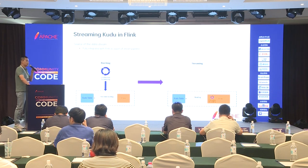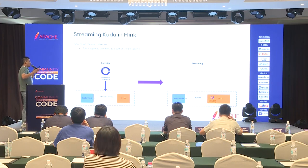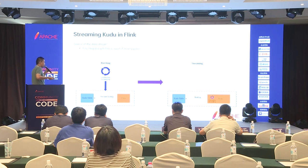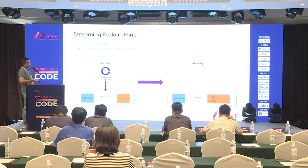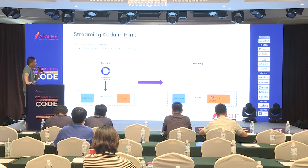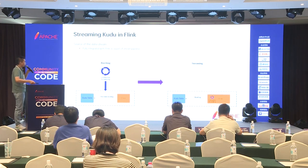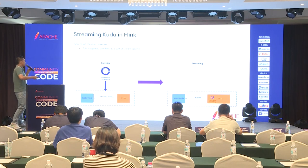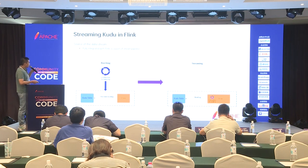One of the things we are doing is implementing a source connector. The source connector will take care of reading the Kudu table, and the Flink system will trigger this reading. More specifically, we implement this source function and read the data in the run method with an infinite loop to continuously read data from Kudu. This is the first part of simplifying our architecture, removing the external scheduling system.